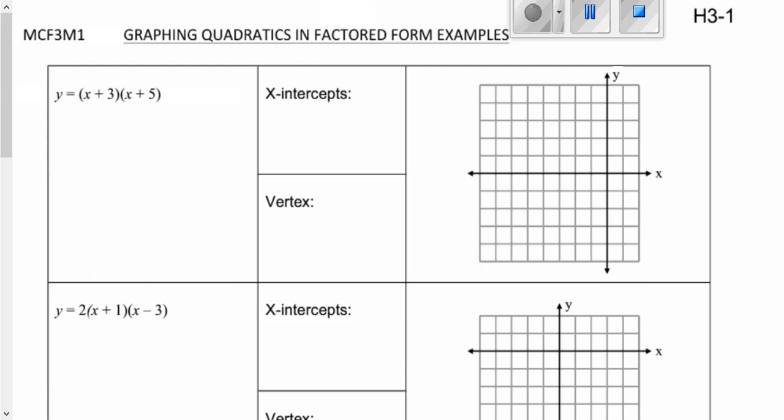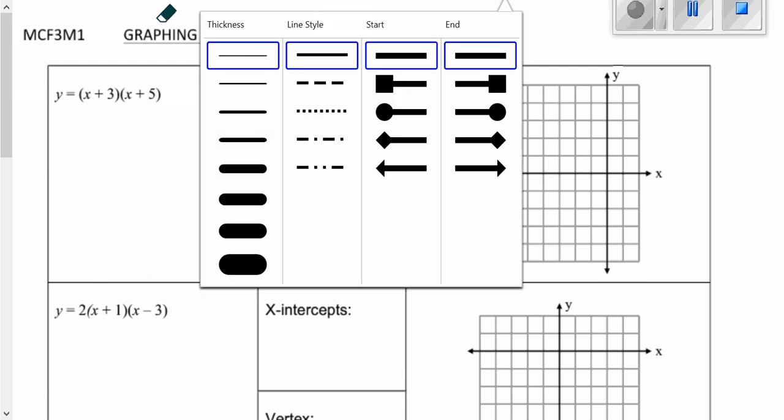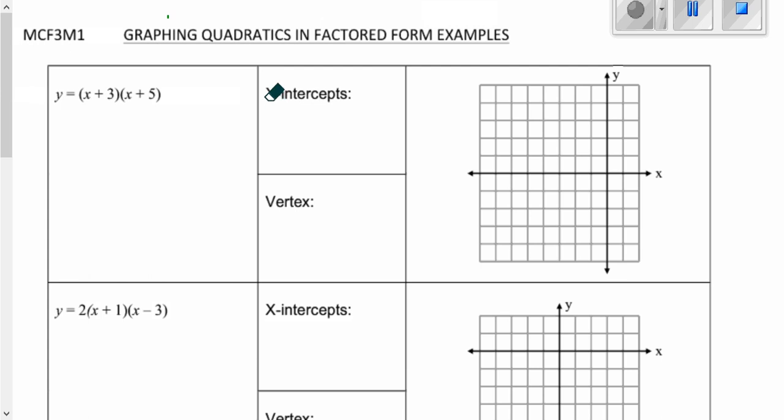The first thing you need to do is graph the x-intercepts. So in a previous lesson you've seen that if the equation is factored you can take each part in those brackets, make it equal to zero, and solve for x. So if you do that on this question here you will see that your x-intercepts are going to be negative 3 comma zero and negative 5 comma zero. So let's put those onto our graph and right here.